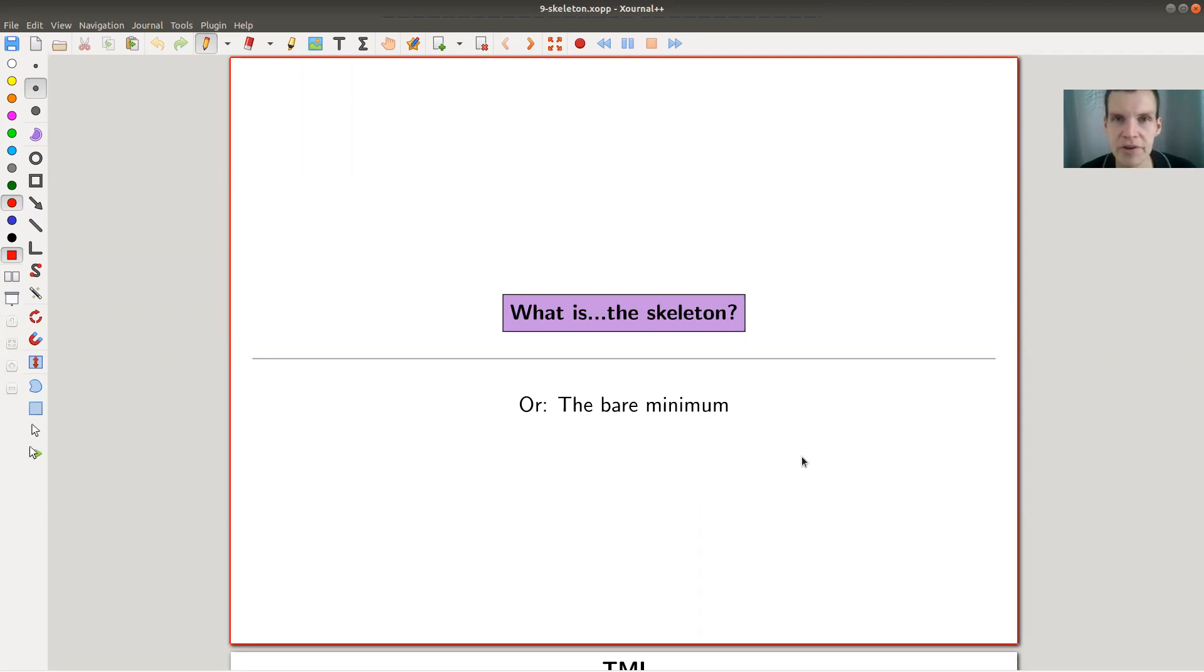Okay, welcome everyone to my continuation of what is category theory. Today, I would like to tell you about a skeleton, or the bare minimum of a category if you want, which is kind of a concept which is really, really cute, and sometimes very useful, and sometimes completely useless. So let's actually have a look at what it could be, or what the main motivation is, and then how it actually works in practice.